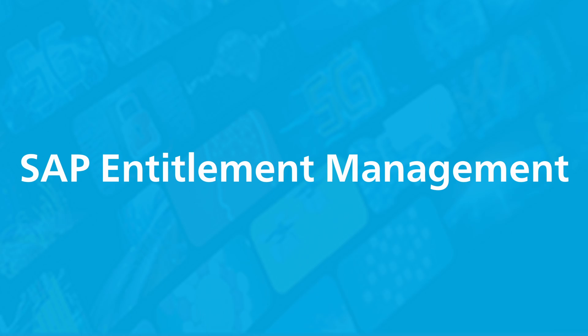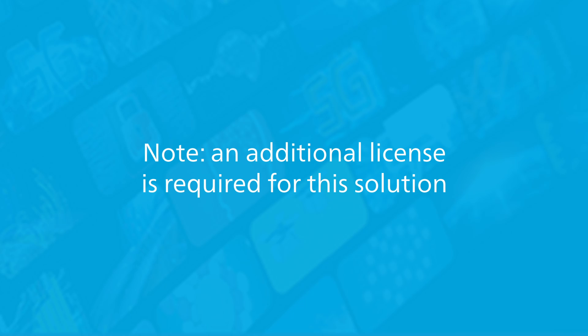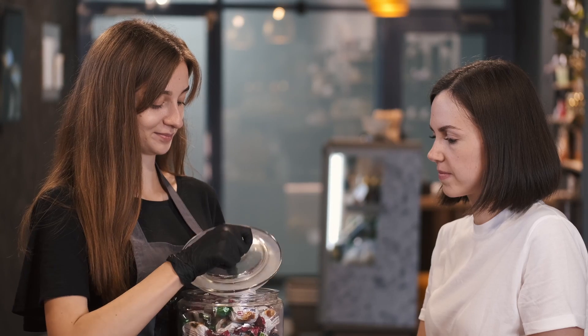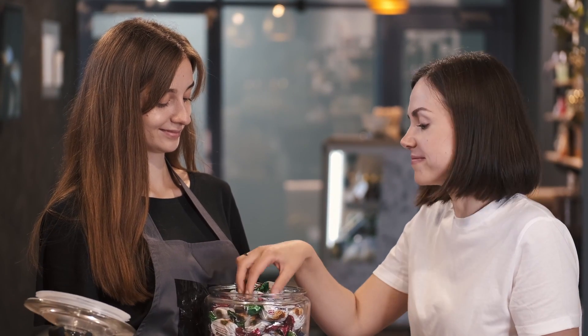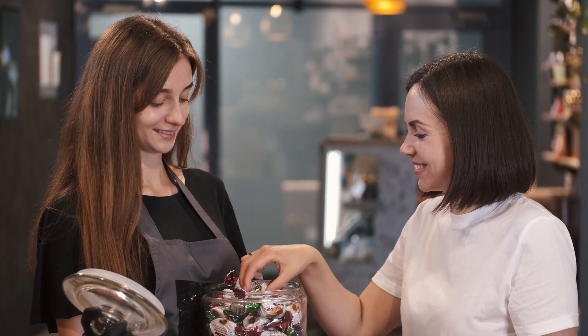SAP Entitlement Management streamlines and automates the process of entitlement management for companies. The solution manages the entitlement lifecycle — i.e., manages what the customer is entitled to. This ensures transparency into what customers are entitled to for both the customer and the sales rep, with alerts, reminders, etc. This, in turn, increases customer satisfaction and provides more opportunities for upselling or cross-selling.